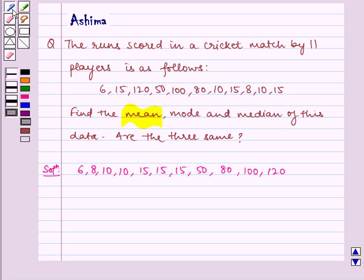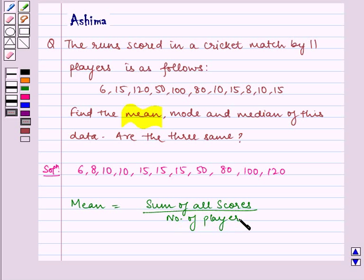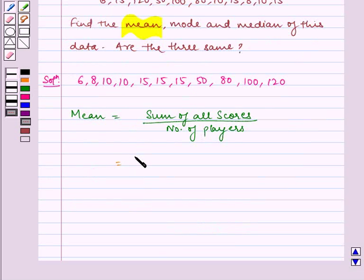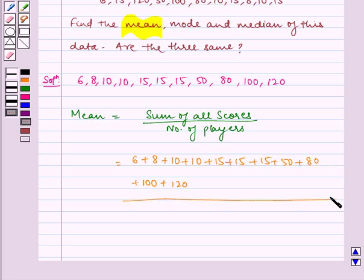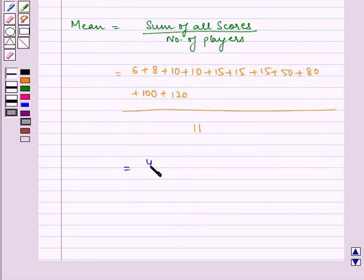First we have to find mean. Therefore, mean equals sum of all scores divided by number of players, which is 6 plus 8 plus 10 plus 10 plus 15 plus 15 plus 15 plus 50 plus 80 plus 100 plus 120, divided by 11, which equals 429 divided by 11, which equals 39. Therefore, mean equals 39.